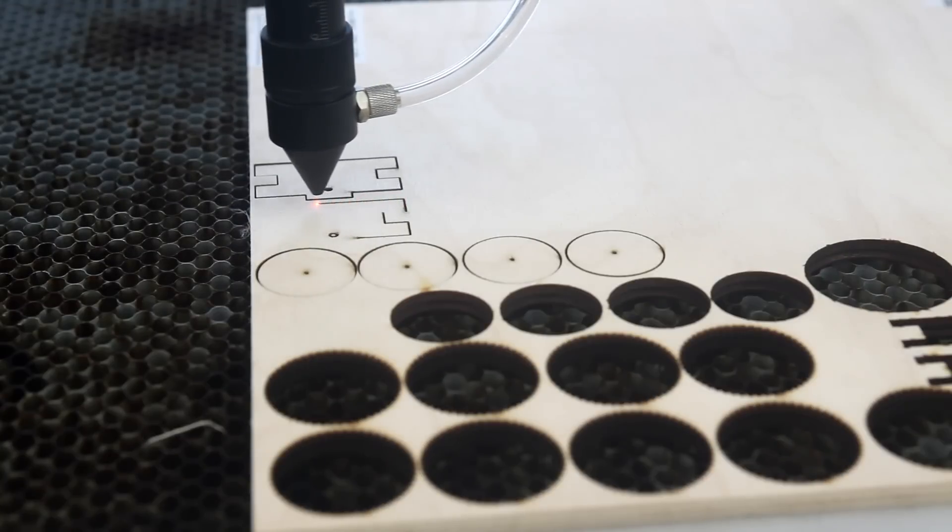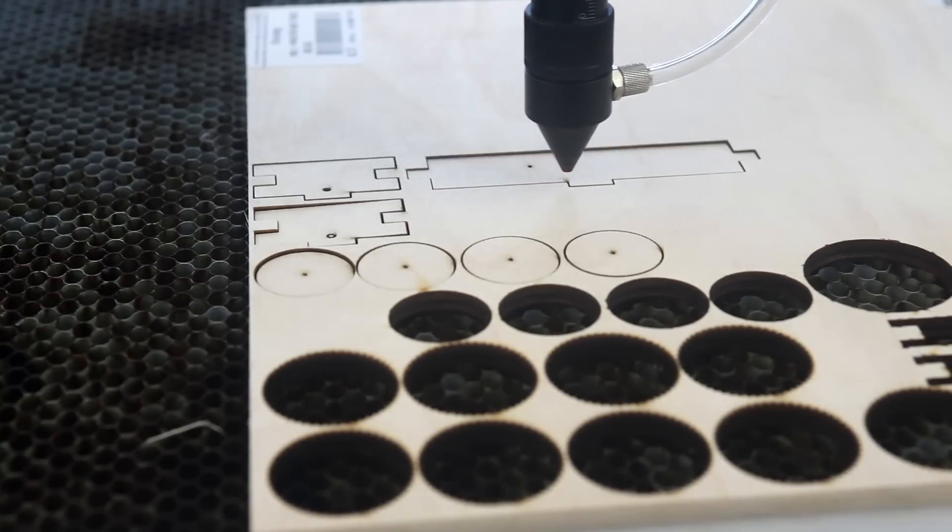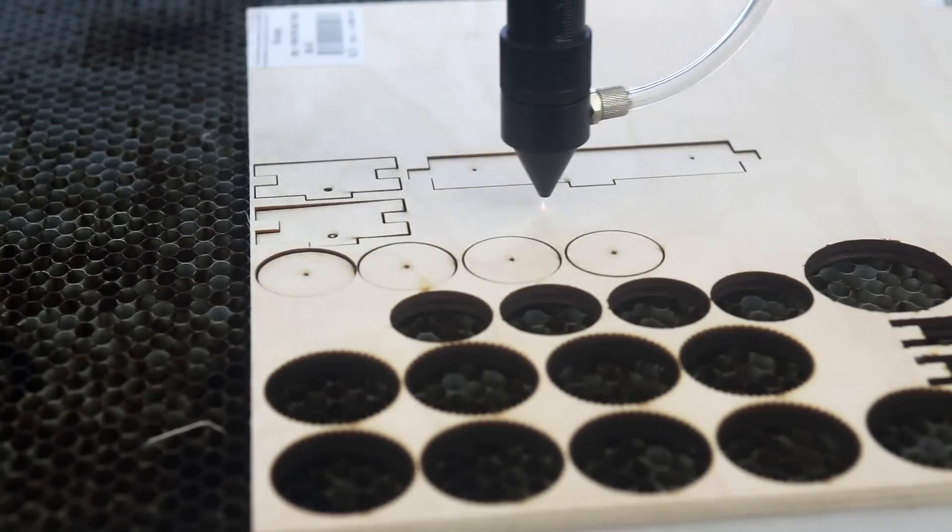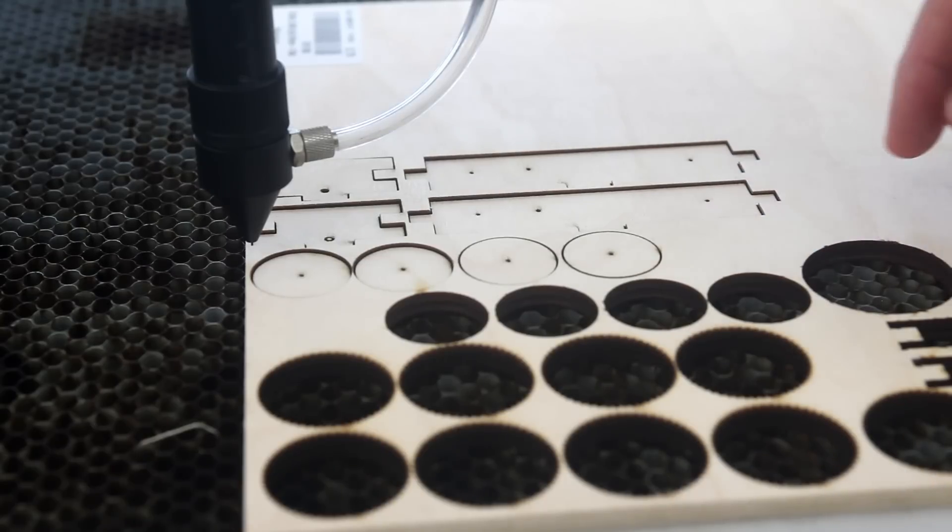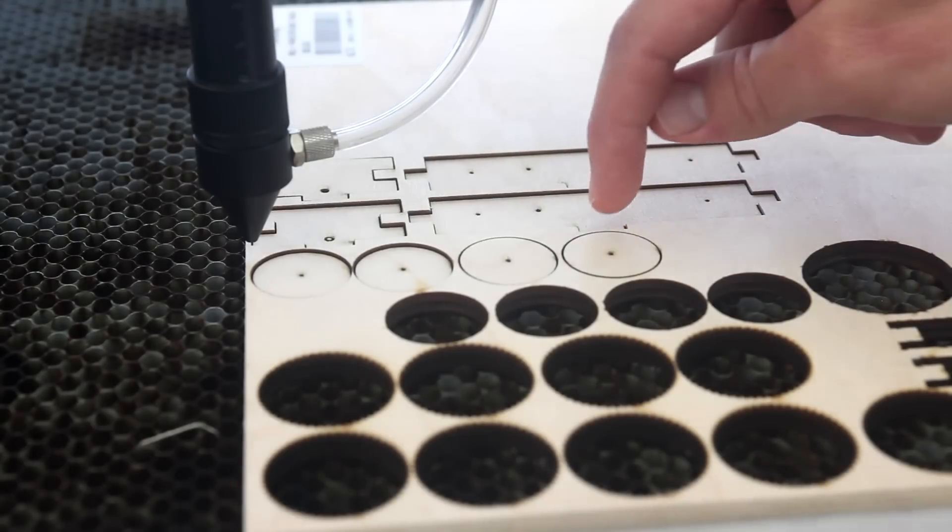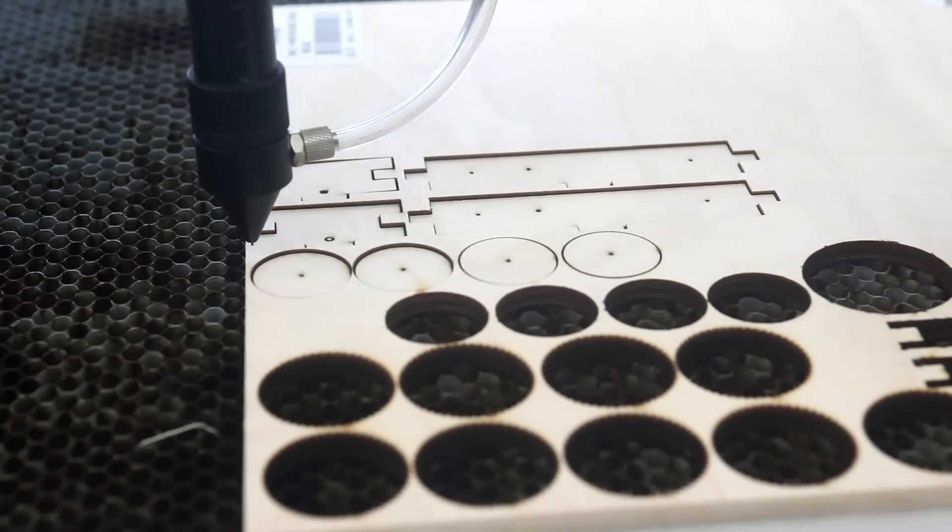You know what really grinds my gears about this free open source laser cutting software which costs me literally nothing? Is the order in which it cuts lines. You have an option to cut the inner features first, which is good. That way everything is lined up. But it won't cut the lines in order. So you'll cut this line, then it jumps over and cuts this line, then jumps over and cuts this line, and it takes forever.